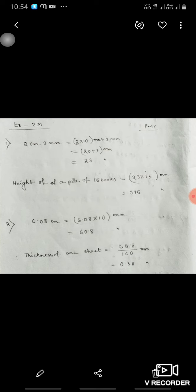Now we have to convert 2 centimeter 3 millimeter. So this is a problem solving. 2 centimeter 3 millimeter, so 2 into 10 means 20 plus 3 millimeter, 23. The height of pile of books will be 23 into 15, that is 345 millimeter.